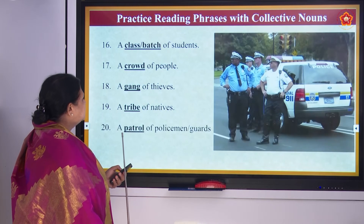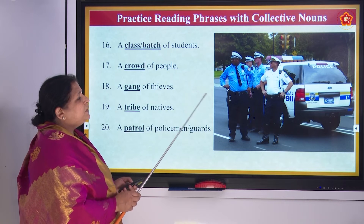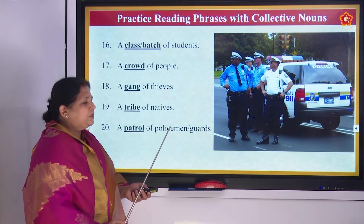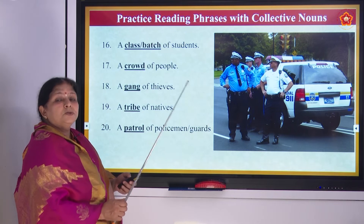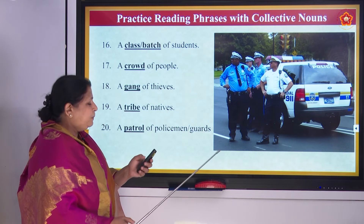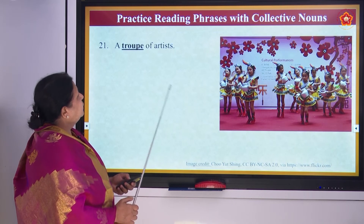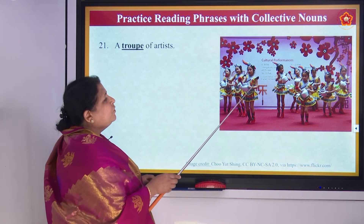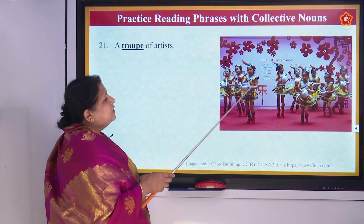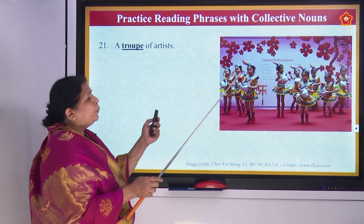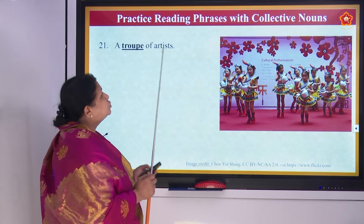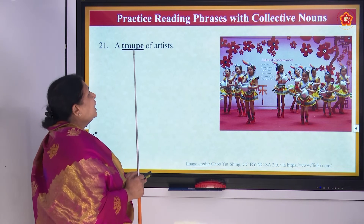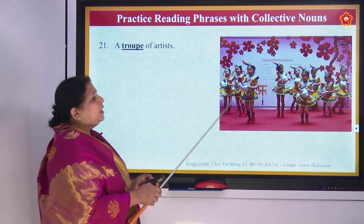When you see many policemen together, it is called a patrol — P-A-T-R-O-L — patrol of policemen or patrol of guards, like home guards. Then a troop of artists. When so many artists are performing a cultural performance on the stage, they are called a troop — T-R-O-U-P-E, troop of artists.